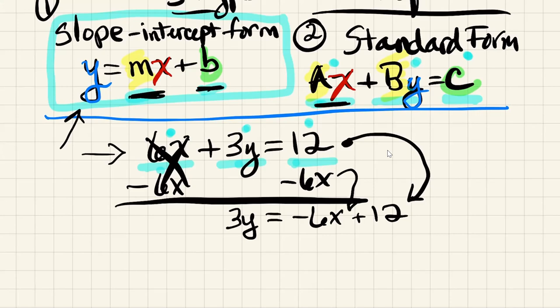Now again, my goal is to try to get that y by itself. And right now, the y is attached to a 3. It's attached to it with multiplication, so I'm going to divide it. But if I do something to one side of the equation, I have to do it to the other side, and that means I need to do it to every term. 3 divided by 3 gives us an invisible 1, leaving us with y. Negative 6x divided by 3 gives us negative 2x, and 12 divided by 3 gives us positive 4.